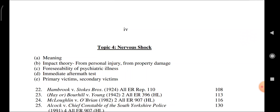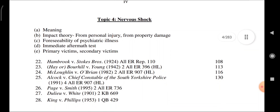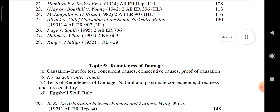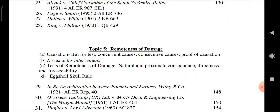Topic 4: Nervous shock. Meaning, impact theory — from personal injury, from property damage, foreseeability of psychiatric illness, immediate aftermath test, primary victims, secondary victims. Case: Hambrook vs. Stokes.